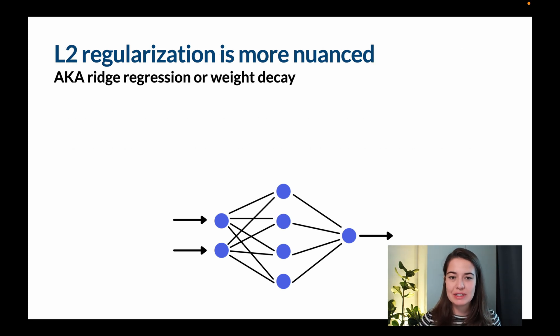L2 regularization is a little bit more different. Again, you might see it mentioned as ridge regression or weight decay all over the sources that you might find. And here what we do is we get the sum, again, of all the weights, but they're squared values. So again, you're basically making the negative ones positive.